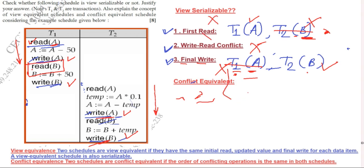We can conclude that this schedule is neither view serializable nor conflict equivalent. Two schedules are view equivalent if they have the same initial read, updated value, and final write for each data item. A view equivalent schedule is also serializable, but we are not able to convert this into a serial schedule. Therefore, this schedule is neither view serializable nor conflict equivalent.